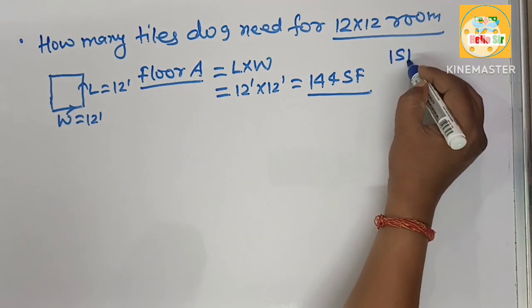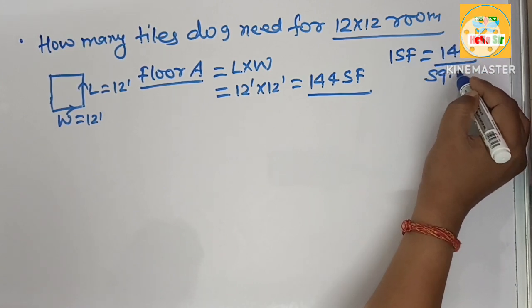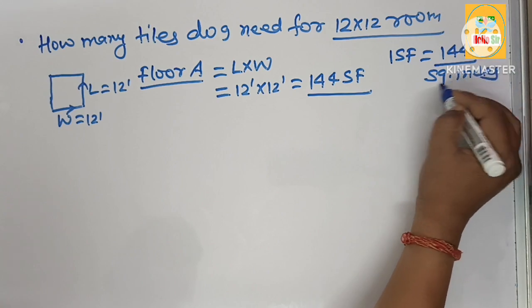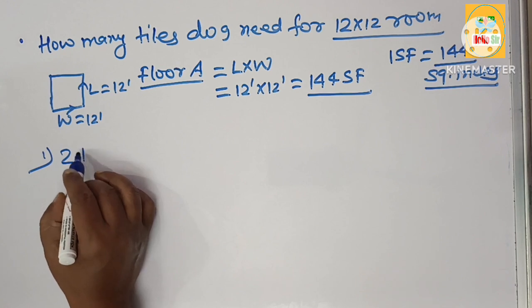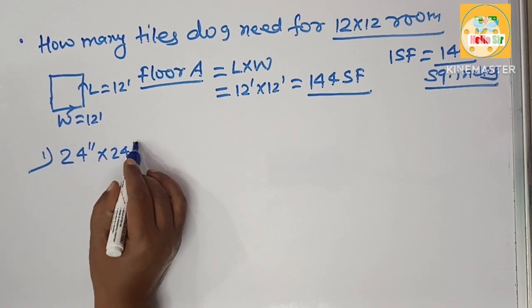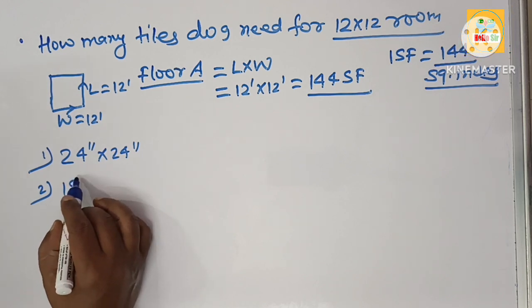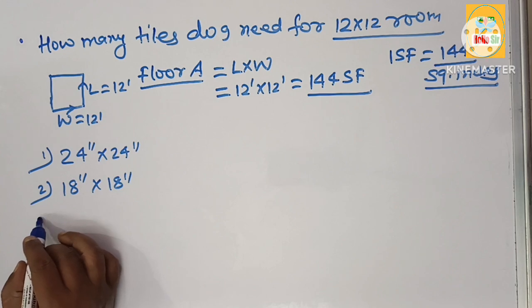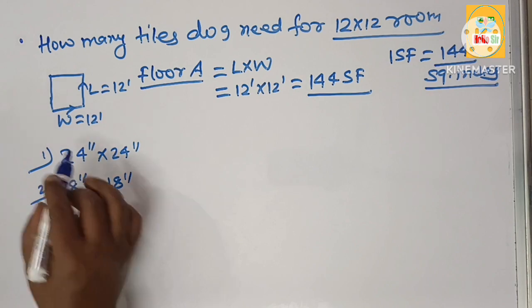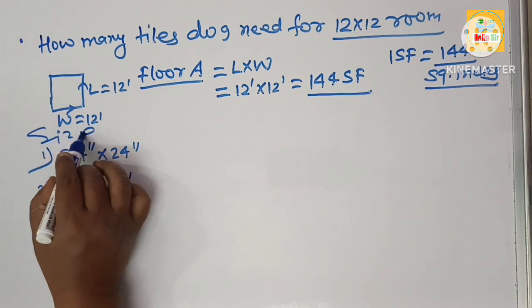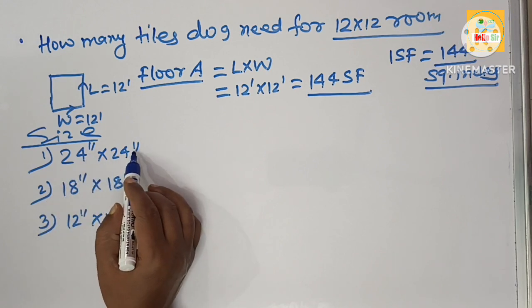Remember, one square foot is equal to 144 square inches. You have many tile size options. Suppose you have 24 inches by 24 inch tiles as the first option, 18 inches by 18 inches as the second option, and 12 inches by 12 inches as the third option. These are the tile sizes available for your project.